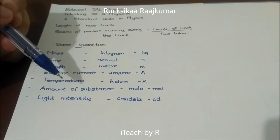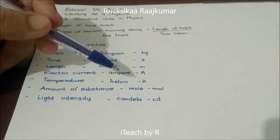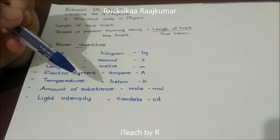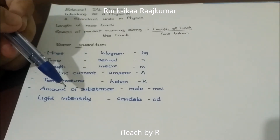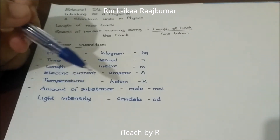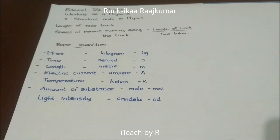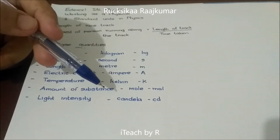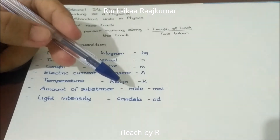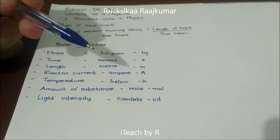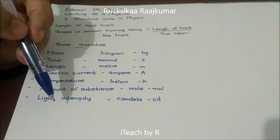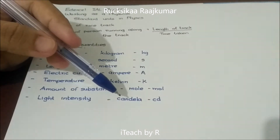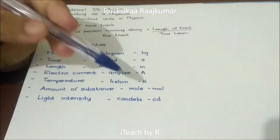Electric current is measured in amperes, written as capital A. The unit of temperature is Kelvin, written as capital K. The unit for amount of substance is mole, written as mol — those who have studied chemistry will be familiar with this and will have done mole calculations. The standard unit for light intensity is candela, written as Cd.